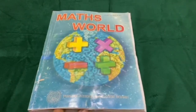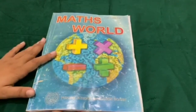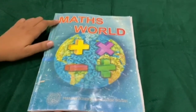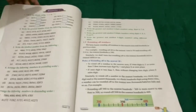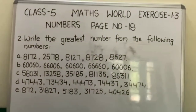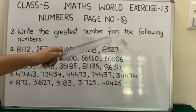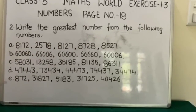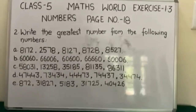Now you have learned about the greatest number. For homework, you will solve some questions from your mathematics book on page number 18, exercise 1.3, as written on the board: 'Write the greatest number from the following.' These are the parts of the question and you will solve them yourself. Thank you.